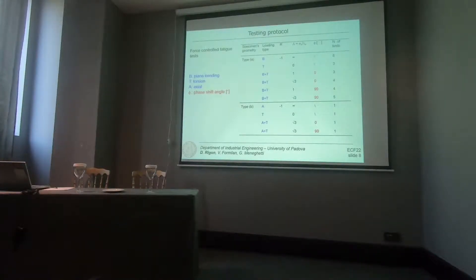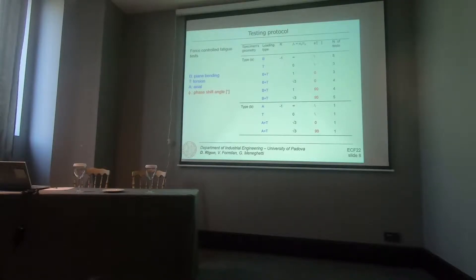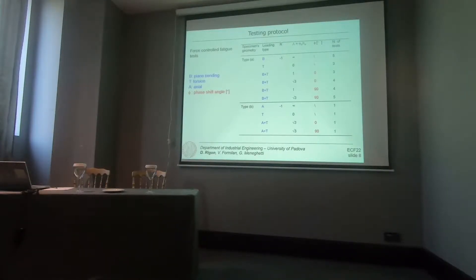The testing protocol is summarized in this table. For specimen A, we carried out pure bending fatigue tests, pure torsional fatigue tests, and combined bending-torsional fatigue tests, all with a stress ratio equal to minus 1. We investigated two biaxiality ratios — 1 and square root of 3 — and also two phase shift angles: 0 degrees and 90 degrees.